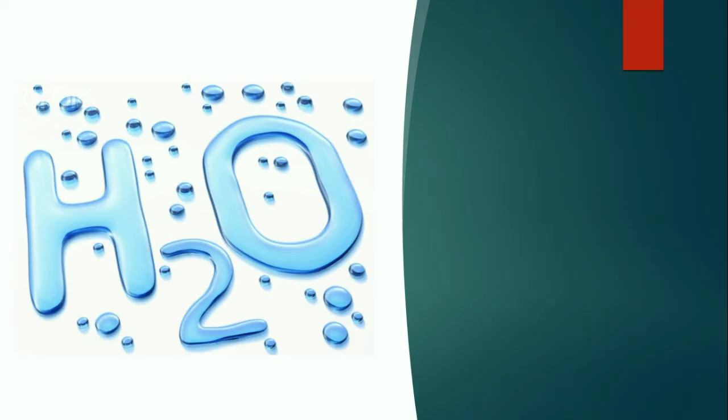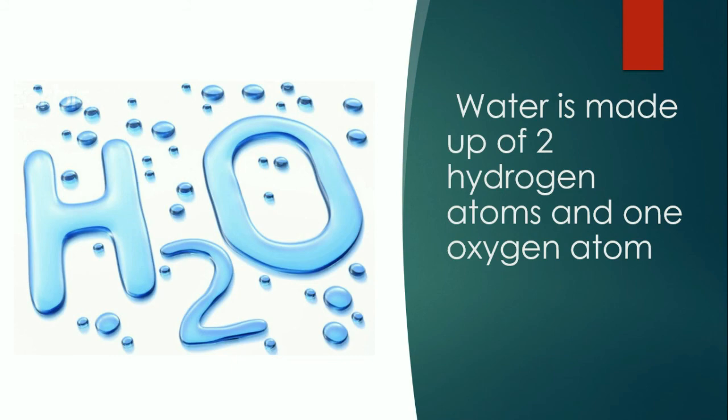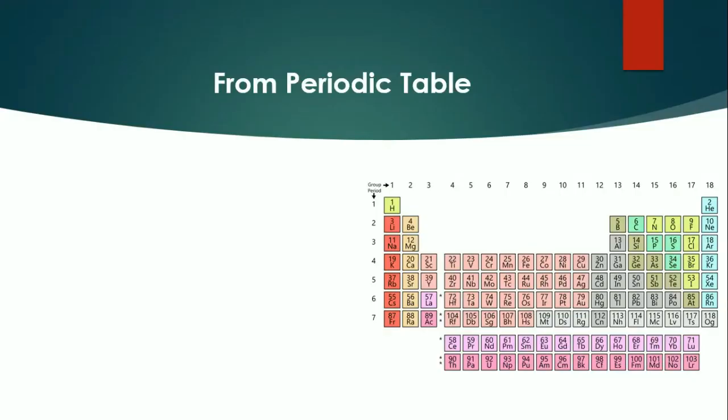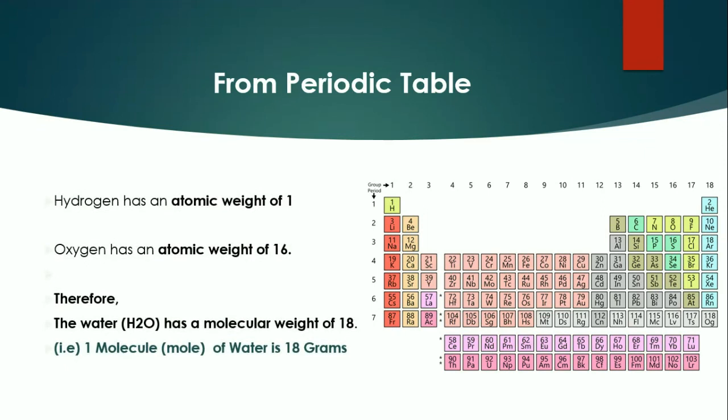Water is made up of two hydrogen atoms and one oxygen atom. From the periodic table, we are taking the atomic weights of hydrogen and oxygen to calculate the molecular weight of H2O.